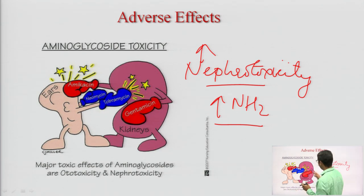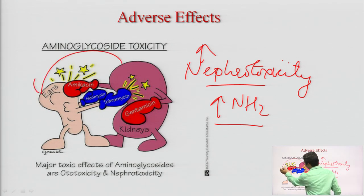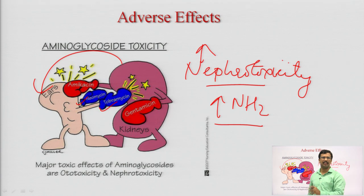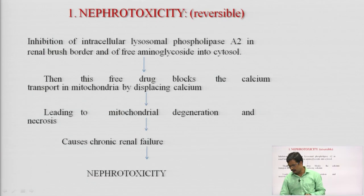The major route of excretion is urine, with a half-life of approximately 1 to 4 hours. In elderly people, the dose needs to be tapered because they have compromised renal function — the kidney cannot effectively excrete the drug. Regarding nephrotoxicity: the more NH2 groups present in the aminoglycoside, the more nephrotoxic it will be. The number of NH2 groups defines the nephrotoxicity of that particular aminoglycoside. Amikacin and gentamicin are very toxic to the ears, whereas neomycin and tobramycin are toxic to the kidneys.